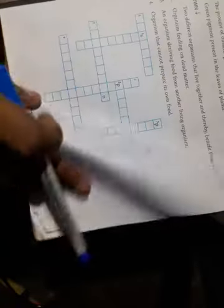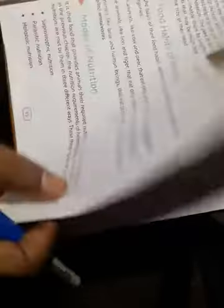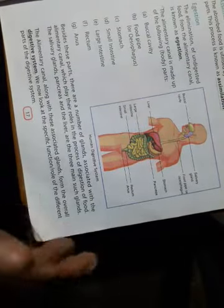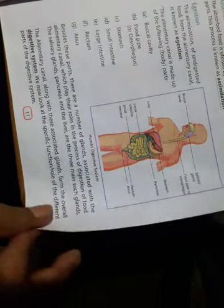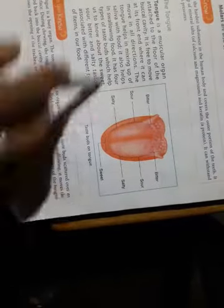The third figure is the human digestive system — you know this from class 4. The fourth figure is taste bud on the tongue.